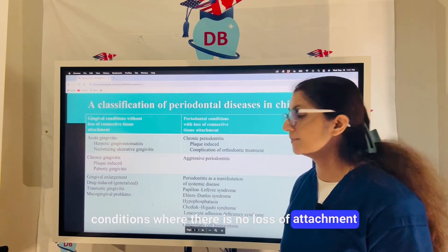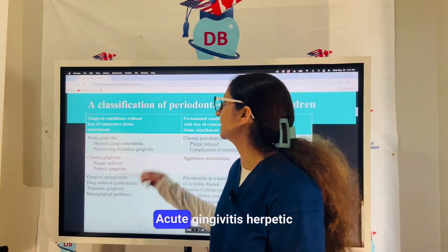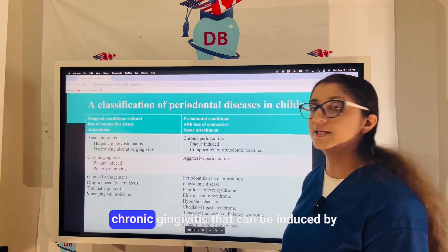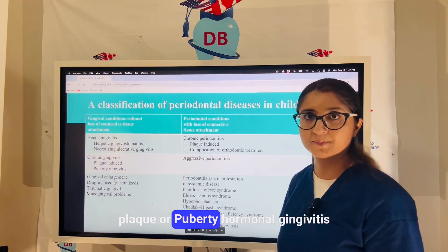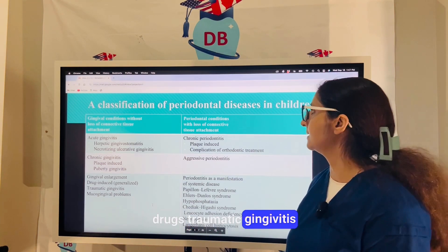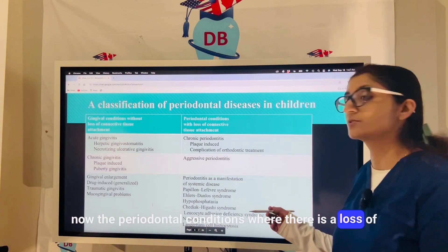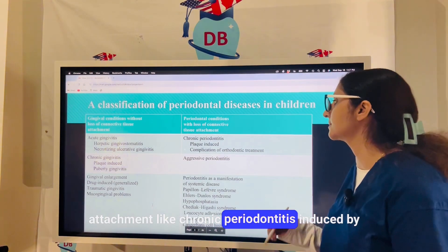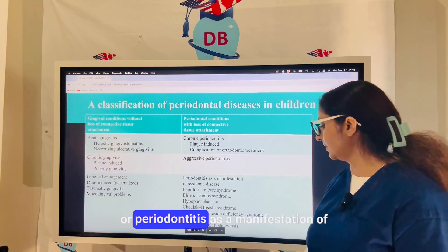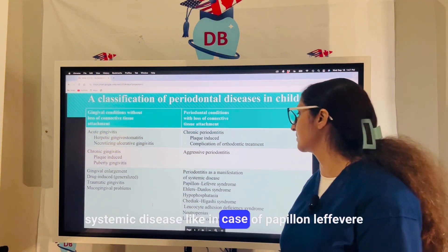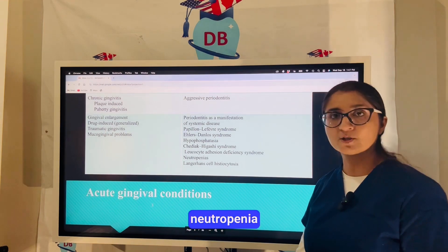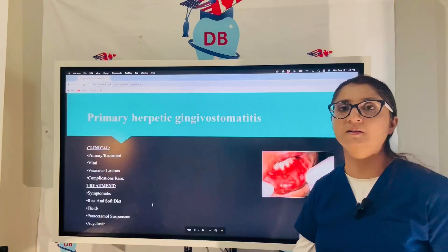Conditions with no loss of attachment, limited only to the gingiva, include acute herpetic or necrotizing ulcerative gingivitis, chronic gingivitis induced by plaque or puberty hormonal changes, gingival enlargement induced by drugs, and traumatic gingivitis. Periodontal conditions with loss of attachment include chronic periodontitis induced by plaque or as a complication of orthodontic treatment, aggressive periodontitis, or periodontitis as a manifestation of systemic disease such as Papillon-Lefèvre syndrome, Ehlers-Danlos syndrome, hypophosphatasia, Chédiak-Higashi syndrome, neutropenia, and Langerhans cell histiocytosis.